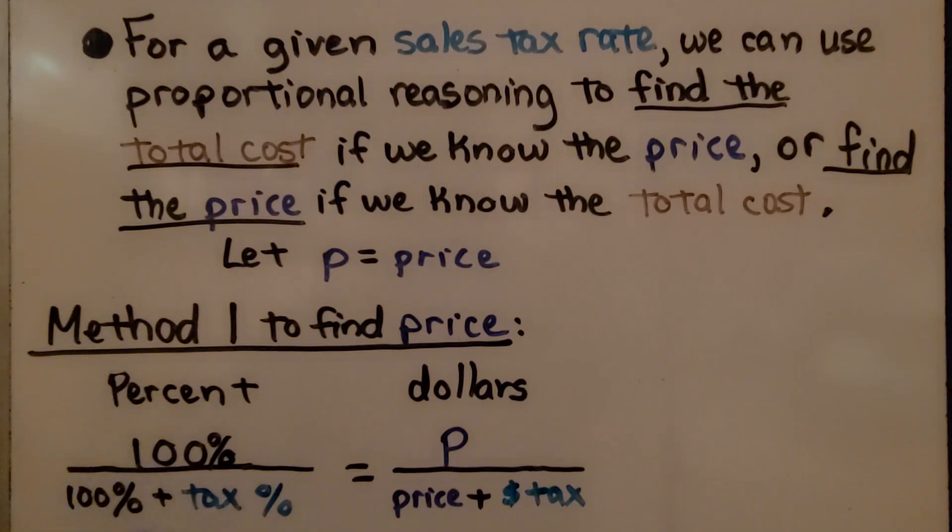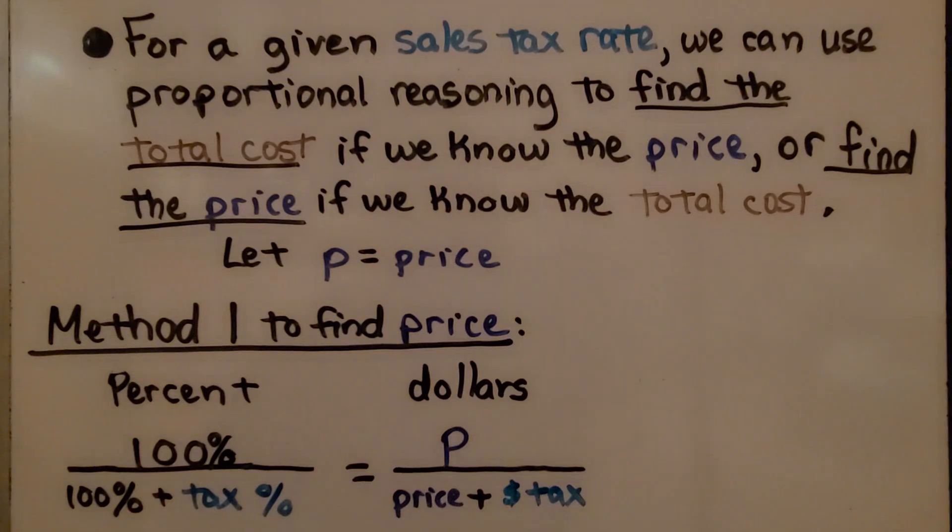We have our percent and we have our dollars. 100% divided by 100% plus the tax percent is equal to the price divided by the price plus the tax dollar. Now, if this is really confusing, just stick with me. I'll explain this the best I can.